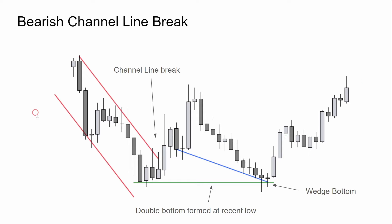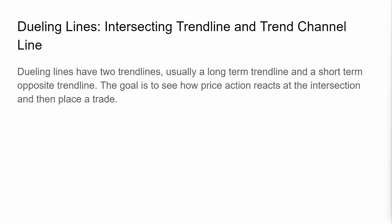This is more of an inside look at the charts — the horizontal price action containing everything. Dueling lines: intersecting trend lines and trend channel lines. Dueling lines have two trend lines — you usually get a long-term trend line and a short-term opposite trend line. The goal is to see how price action reacts at the intersection and then place a trade.